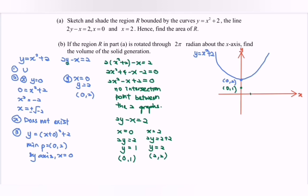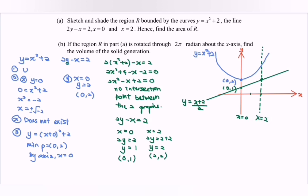So we have the points (0, 1) and (2, 2). We sketch the straight line graph through these points. The region R is bounded by the curve y = x² + 2 (blue), the line 2y − x = 2 (green), x = 0 (the y-axis), and x = 2. The shaded area between these boundaries is region R.